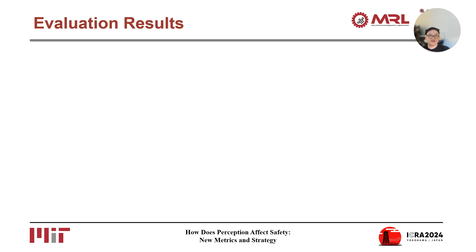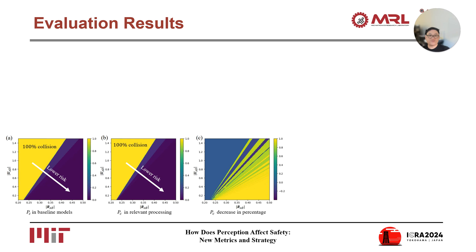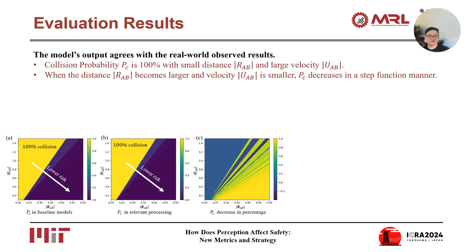This slide shows the testing results based on our new metrics. In the bottom left figures, the vertical axis shows the relative velocity UAB and the horizontal axis shows the distance RAB. Figure A shows the collision probability PC in baseline models, and B shows the PC with the processing strategy based on relevance. Figure C shows the PC decrease in percentage. It is found that the model's output agrees with real-world observed results. Collision probability PC is 100% with small distance RAB and large velocity UAB. When the distance RAB becomes larger and velocity UAB is smaller, PC decreases in a step function manner.